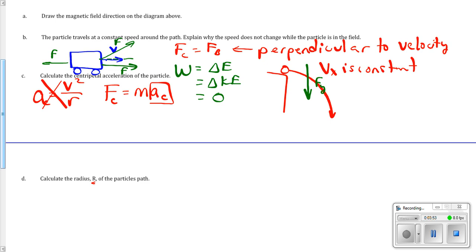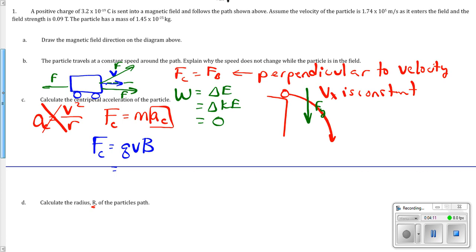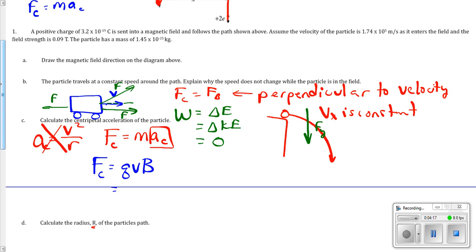F, in this case, is caused by the magnetic field. So, Fc equals Q, V, B. This is B, which contributes to F of B in the equation Q, V, B.